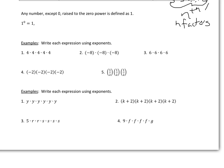We need to talk briefly about what happens when you have any number, except 0, raised to a 0 power. That's defined as 1. For example, 1 to the 0 power is 1, 2 to the 0 power is 1, 3 to the 0 power is 1. In general, x to the 0 power is going to be 1, as long as x does not equal 0. For now, just remember that anything to the 0 power is going to be 1.